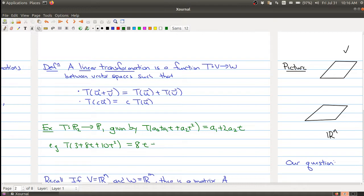So for example, if I had t was equal to 3 plus 8t plus 10t squared, this polynomial gets sent to 8t plus 20t.